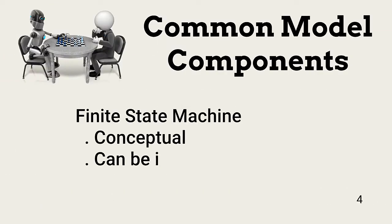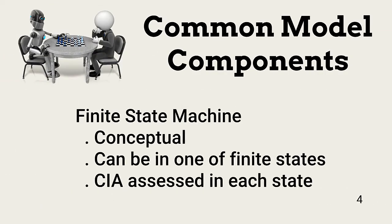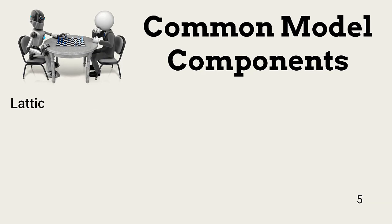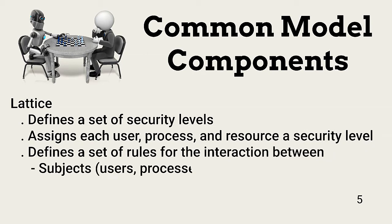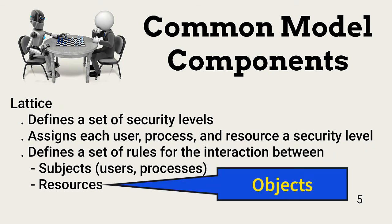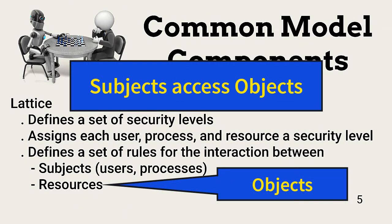There are two common model components: finite state machine and lattice. The finite state machine model is assumed to be in a series of states. For each state, confidentiality, integrity, and availability are assessed. Using the lattice approach, assessors identify probable subjects — which are users and processes — that will access a resource or object. The subjects and resources are assigned security levels, and a set of rules is established for how they should interact.